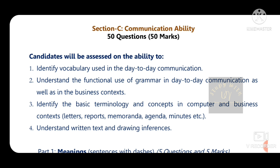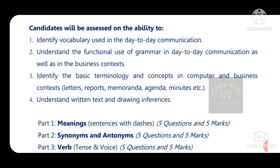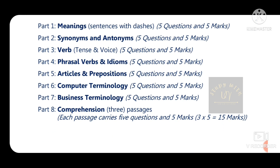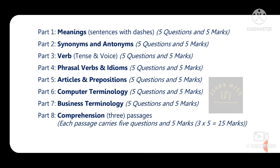Section C is Communication Ability, which is English. It has 50 questions and 50 marks. Topics include meanings, synonyms and antonyms, tenses and voices (active and passive voice), phrasal verbs and idioms, articles and prepositions, computer terminology, business terminology, and comprehensions — three passages will come.